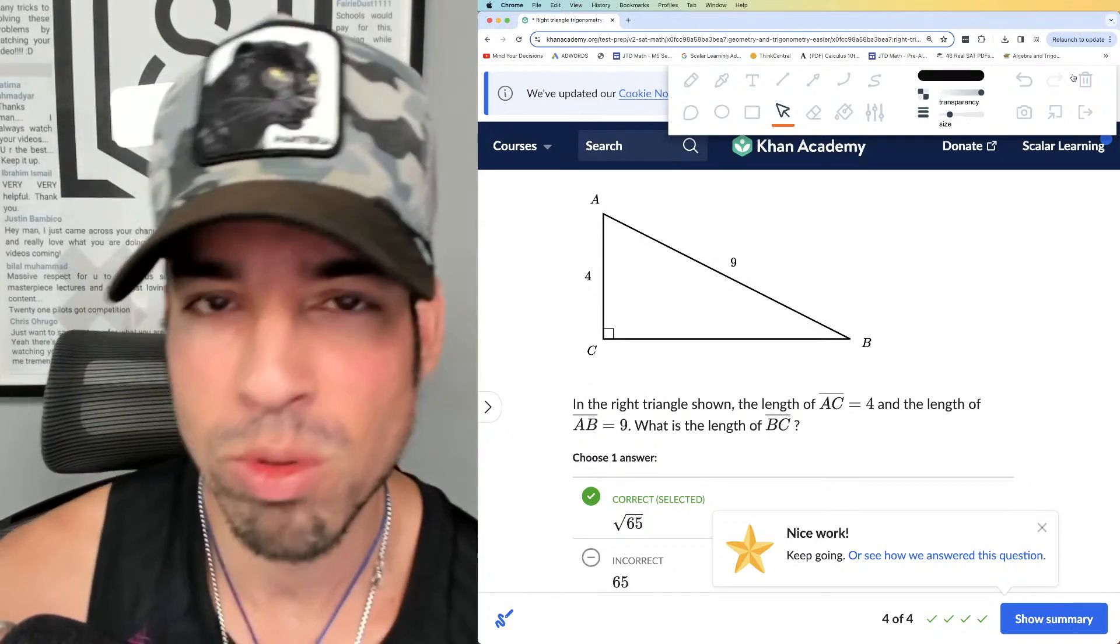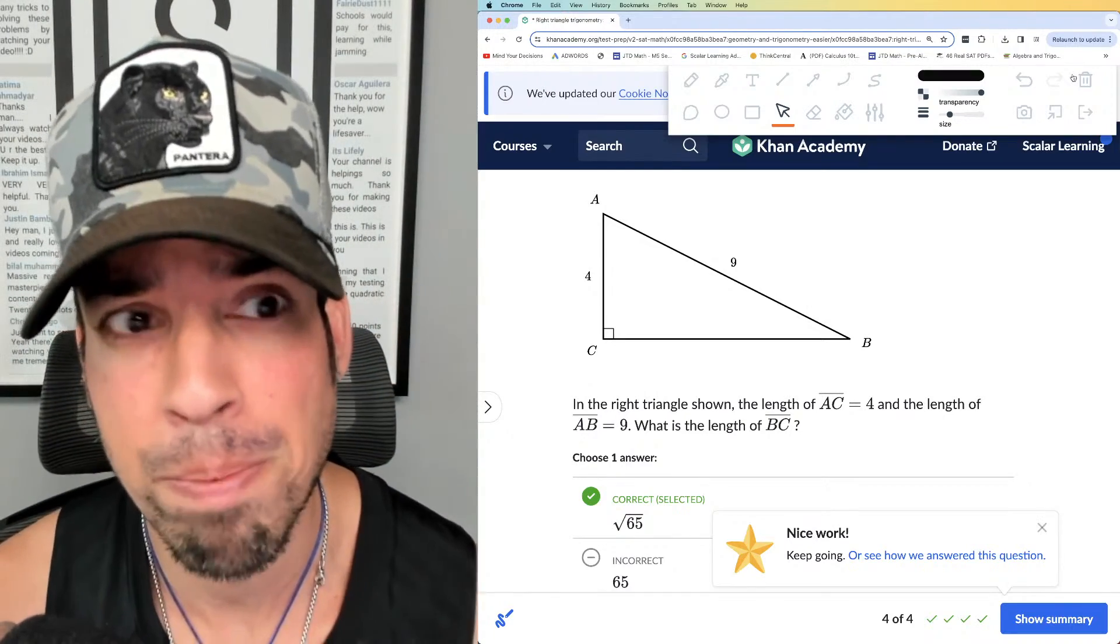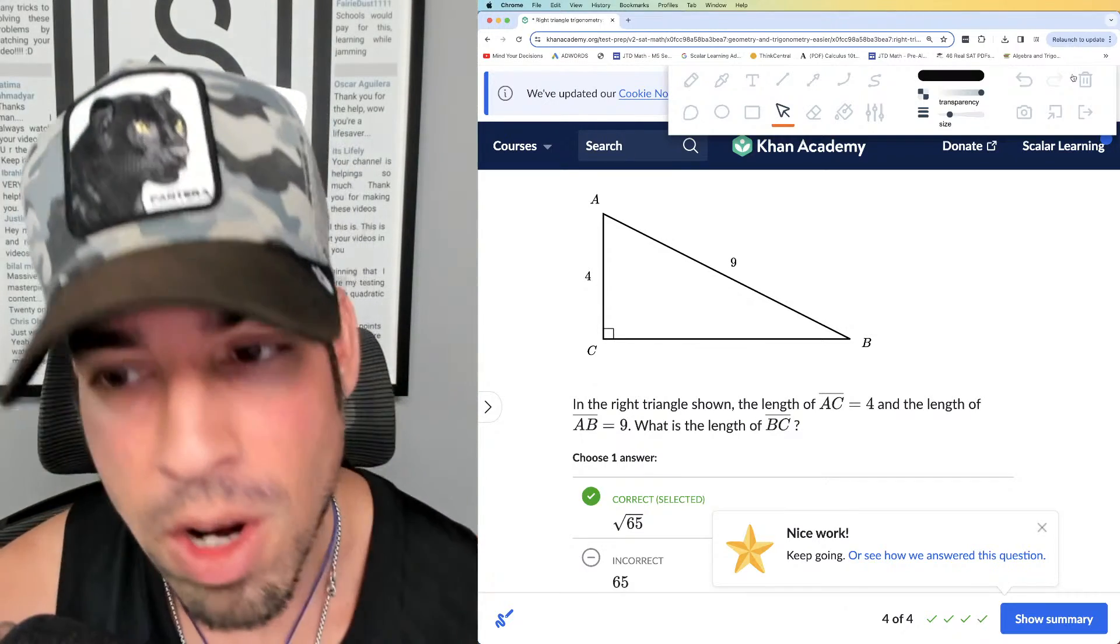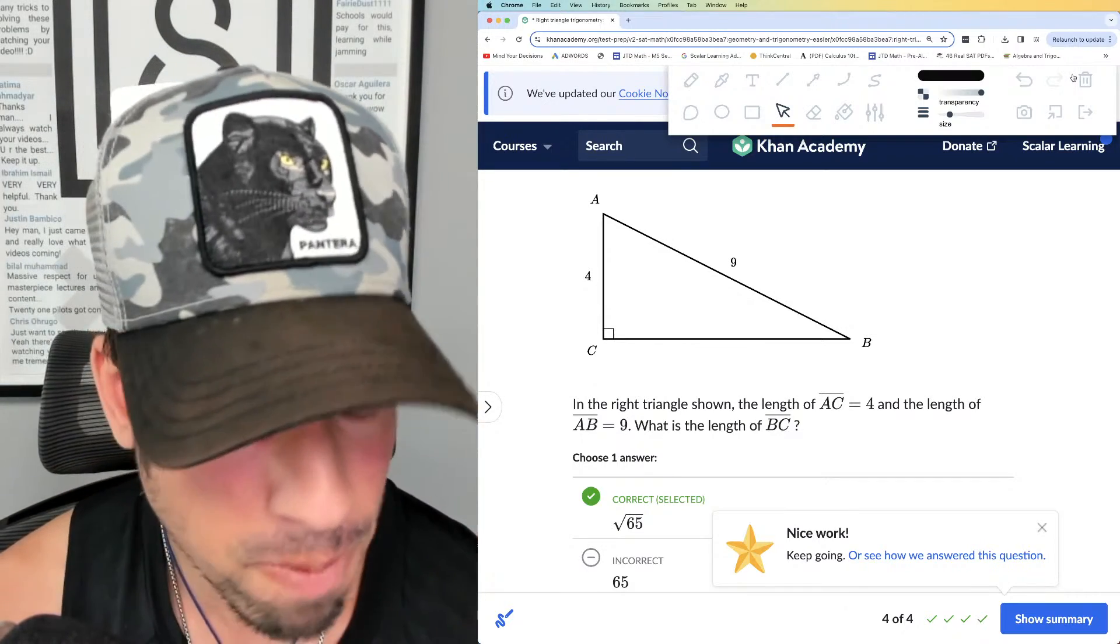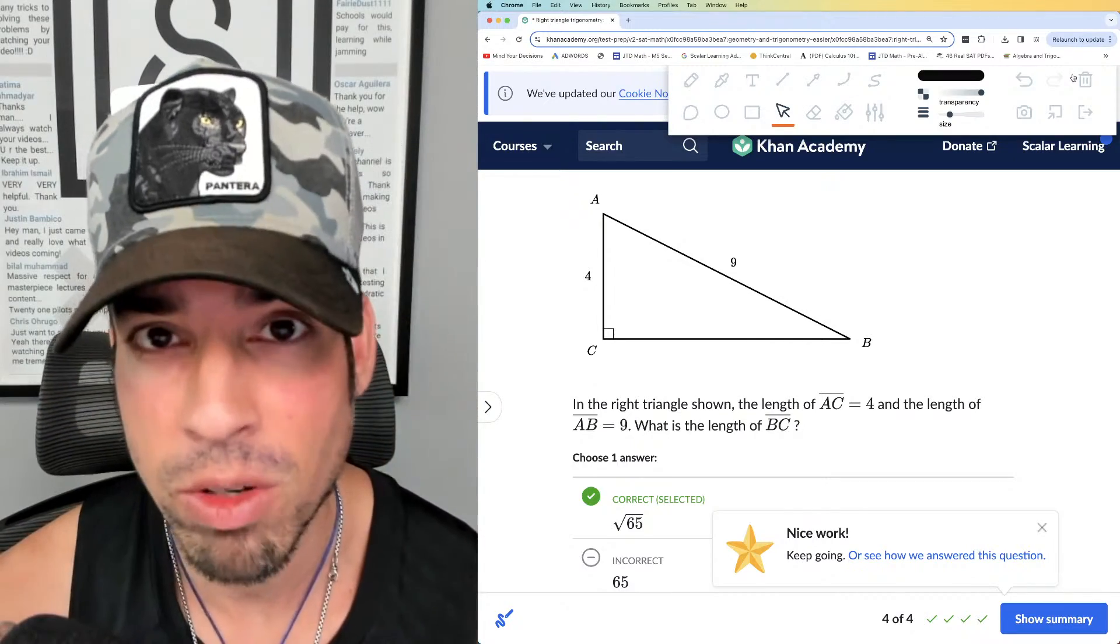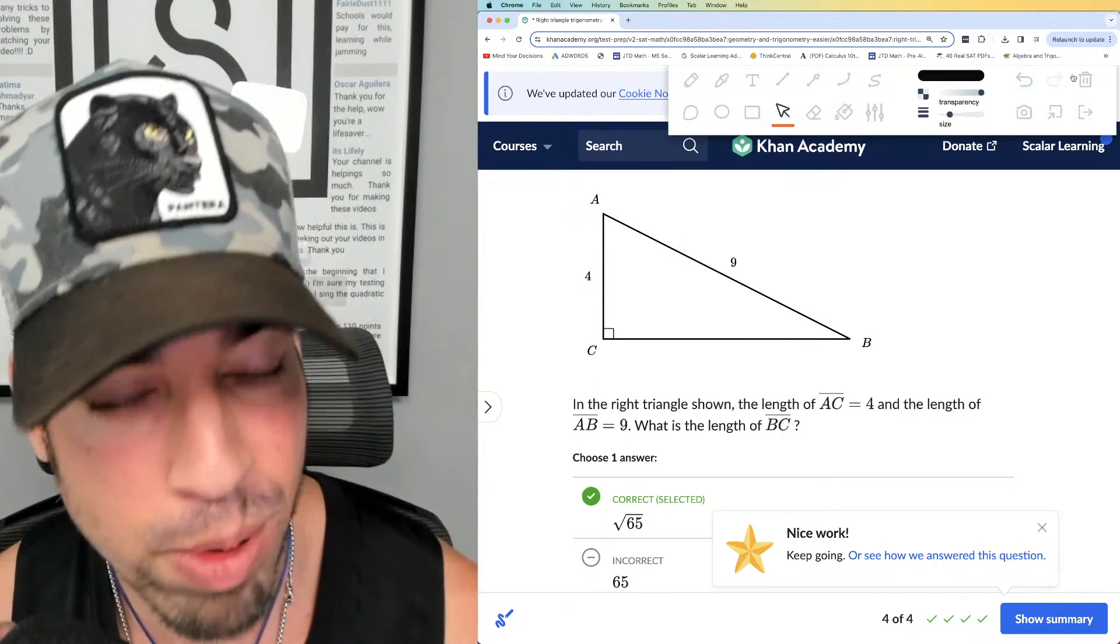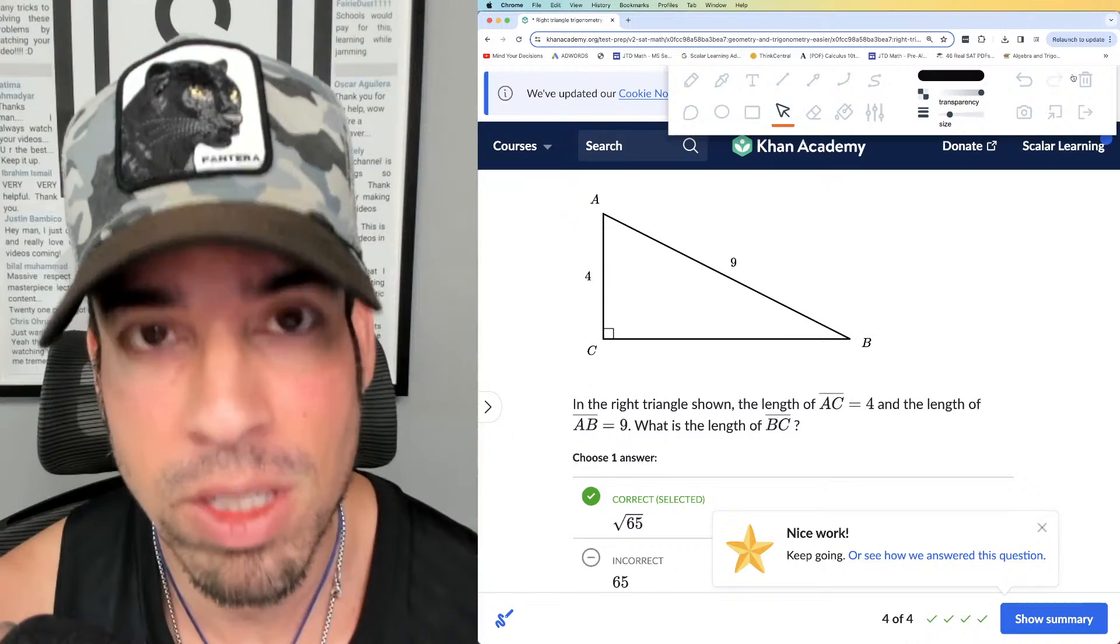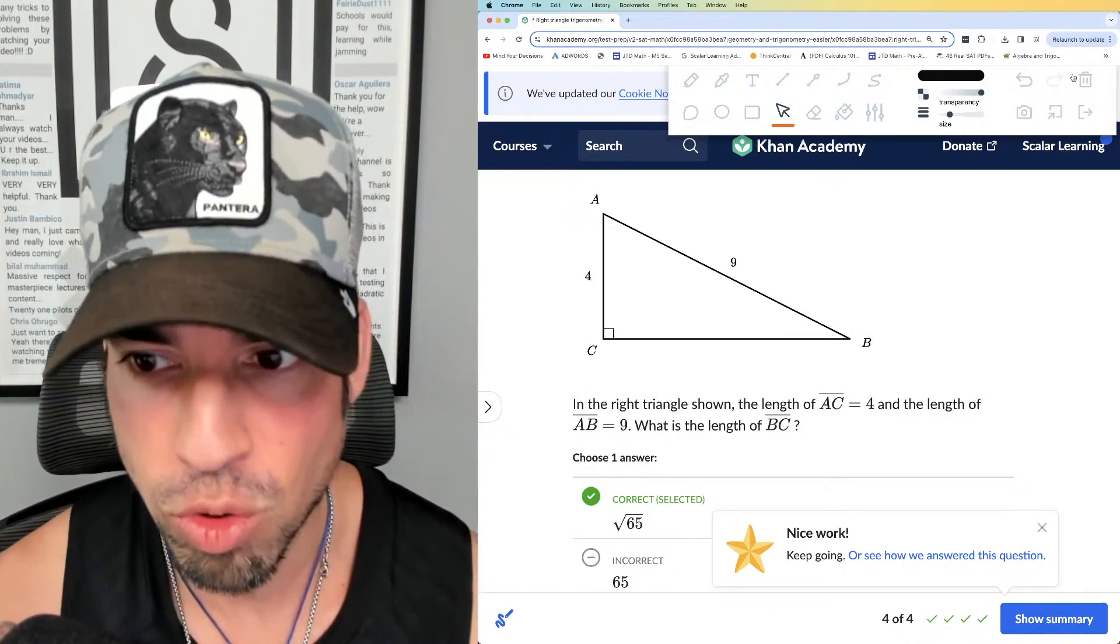Use the code SCALAR for 20% off. It's the best of the best when prepping for the Digital SAT—new frontier, new resources. Check them out. I've partnered with them officially and I've got my video explanations up with their first 10 practice tests. Every single question is explained by yours truly, so make sure to check that out.